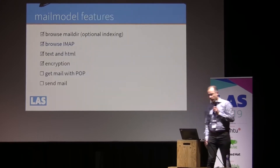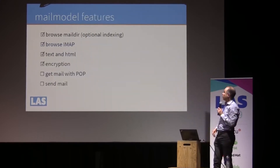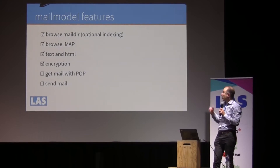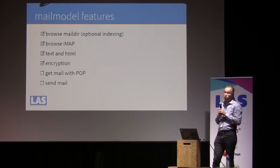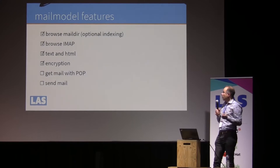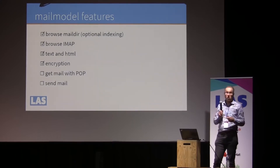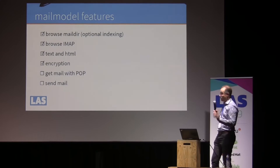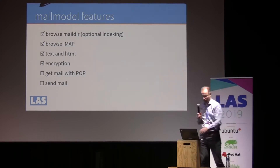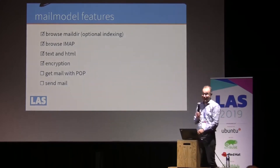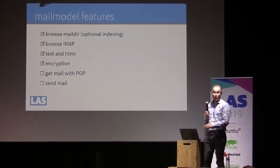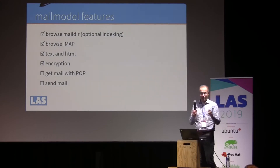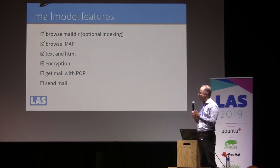What are the features? Well, you can browse a mail directory, you can browse IMAP, it shows text and HTML, and it does encryption. What you can't do yet is fetch your email via POP, and you can't send email yet — that's the next big feature. I already have the user interface for it, but so far I'm just reading emails.